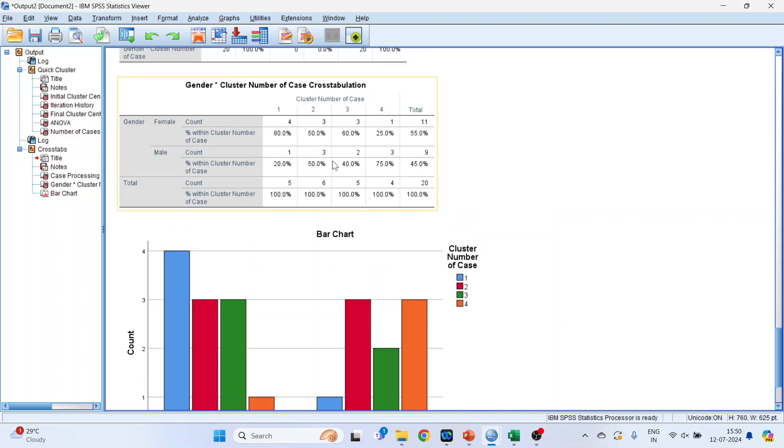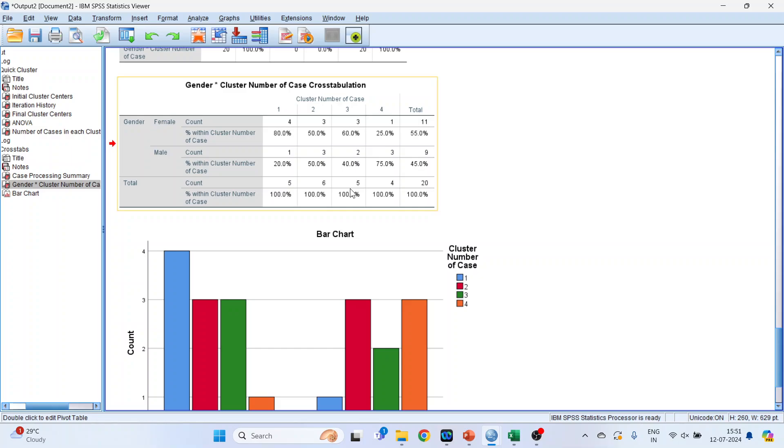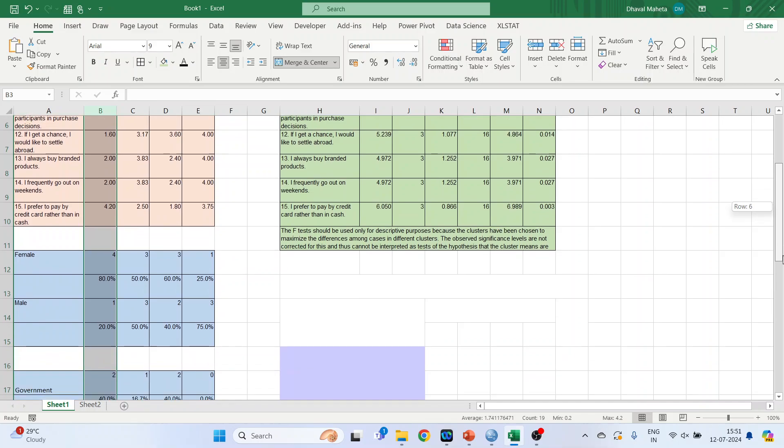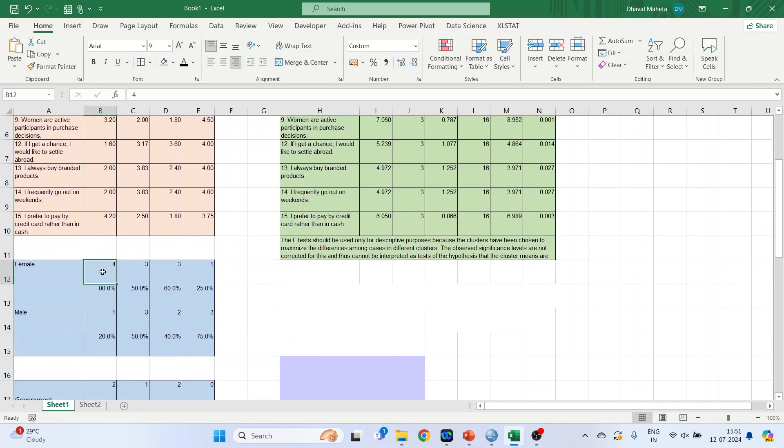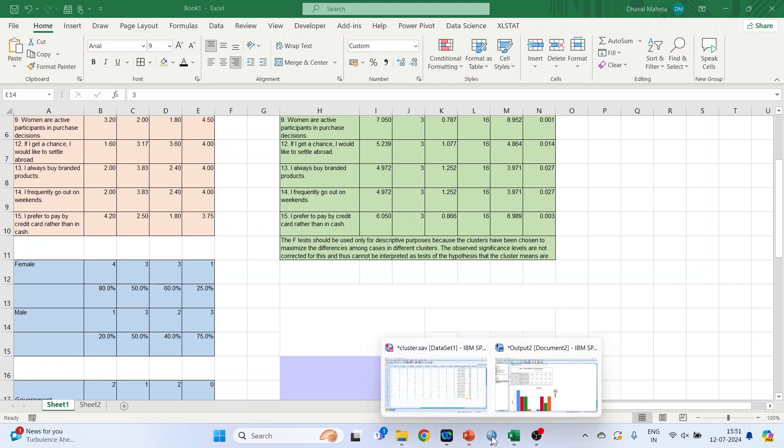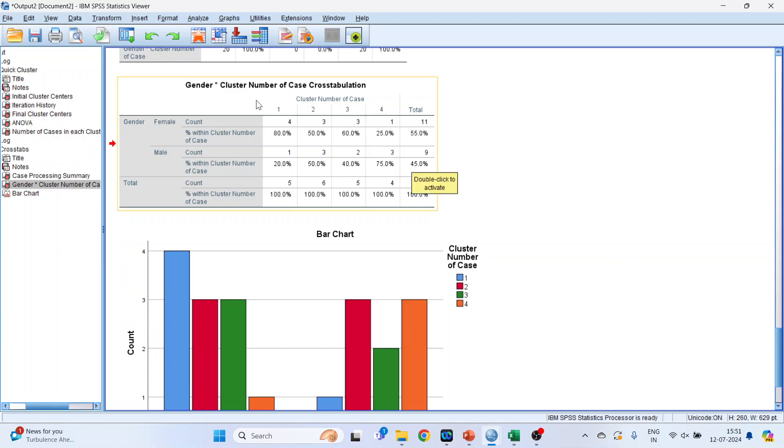So you will get the cross tabulation of cluster and gender. That in first cluster, how many females are there and how many males are there. In second cluster, how many females and males. I will simply copy this table into the Excel sheet with the gender percentages for each cluster.